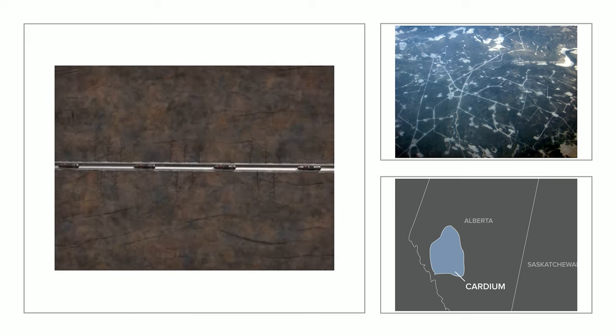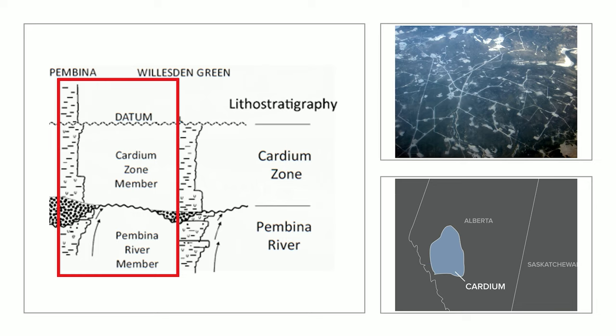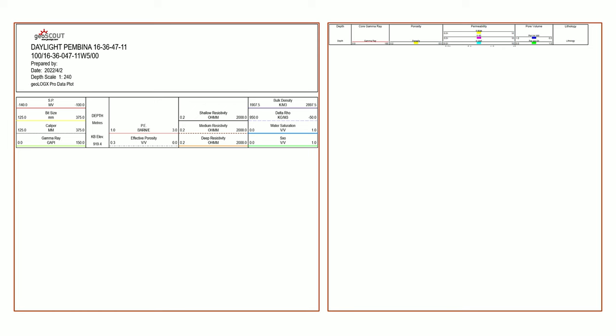The Cardium in Pembina is composed of two lithostratigraphic units: the upper Cardium zone member and the lower Pembina river member. Reservoir-like qualities are found in the latter member as the former is primarily composed of shale. The area we used for data collection was chosen such that enough information can be gathered to create a realistic geological model.